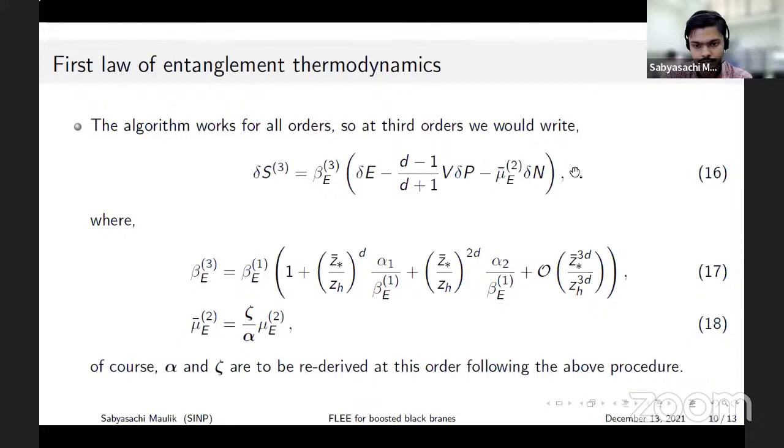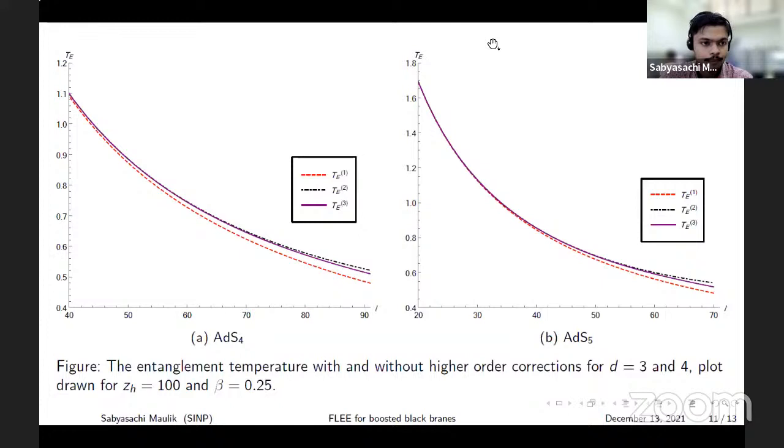Then we can show that the first law is satisfied. In this figure I have plotted the entanglement temperature and its dependence on the subsystem length for AdS_4 and AdS_5 and try to reflect on the effect of corrections.